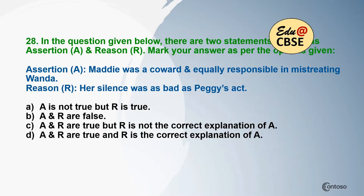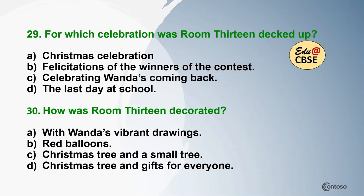Question 28: There are two statements. Assertion (A): Mary was a coward and equally responsible in mistreating Wanda. Reason (R): Her silence was as bad as Peggy's act. Read the options and pick accordingly. Question 29: For which celebration was room 13 decked up? Question 30 — the last question: How was room 13 decorated?